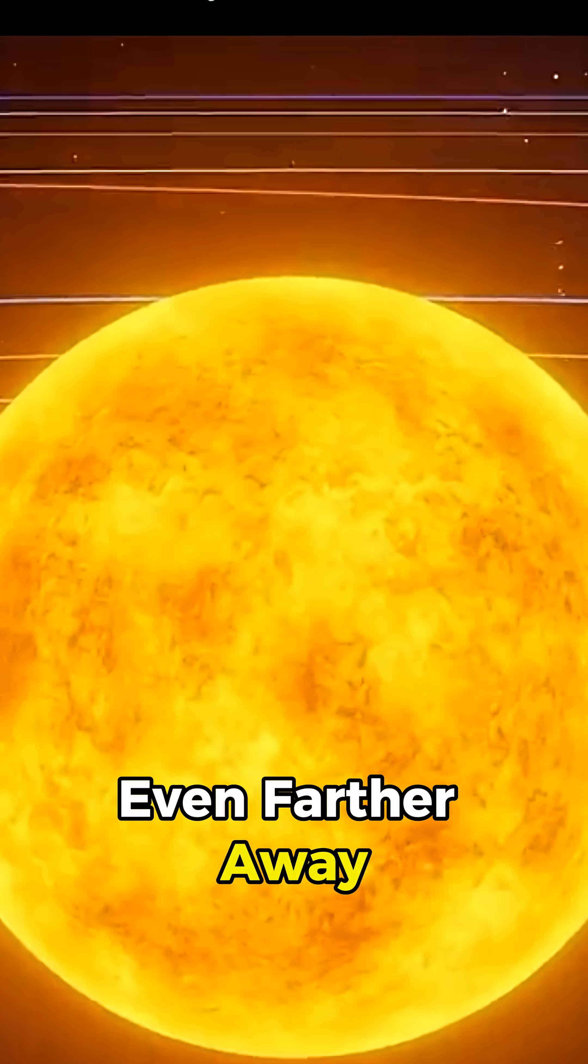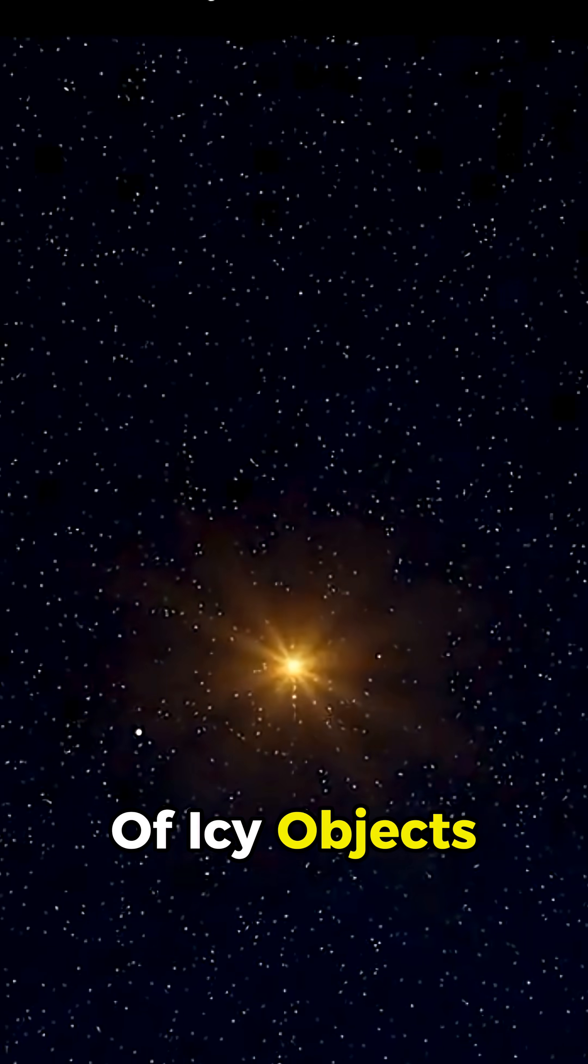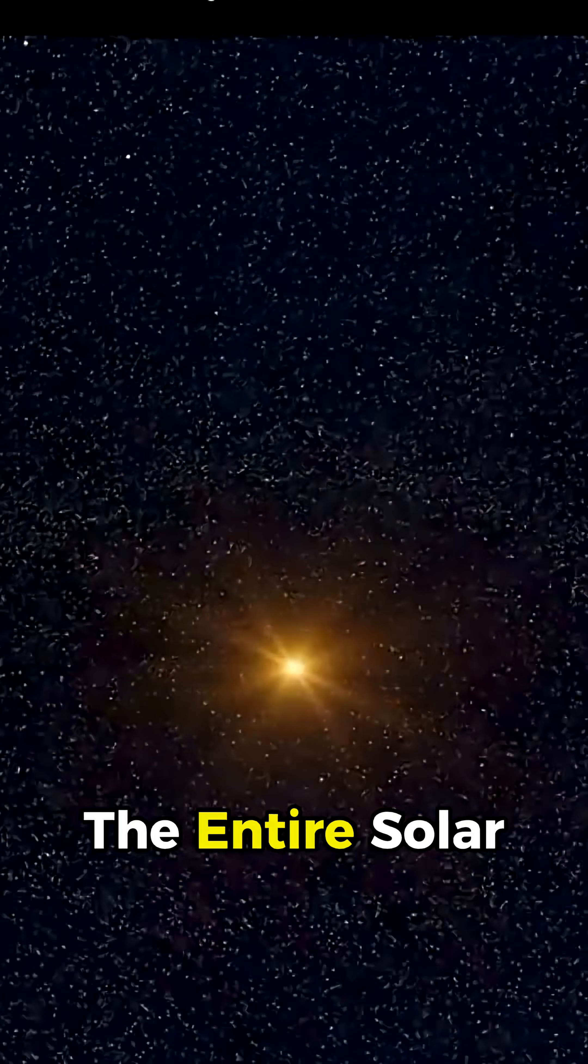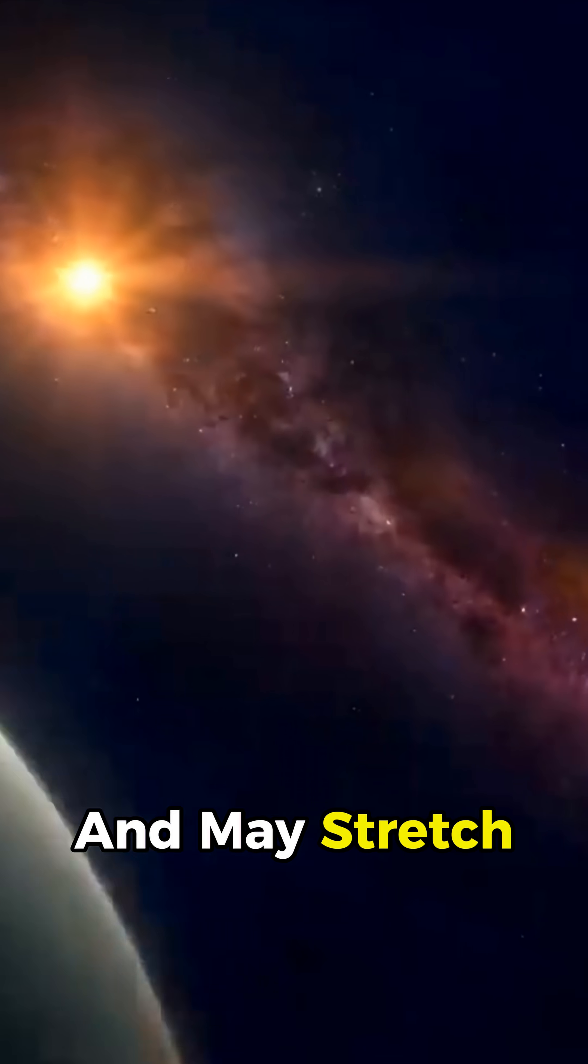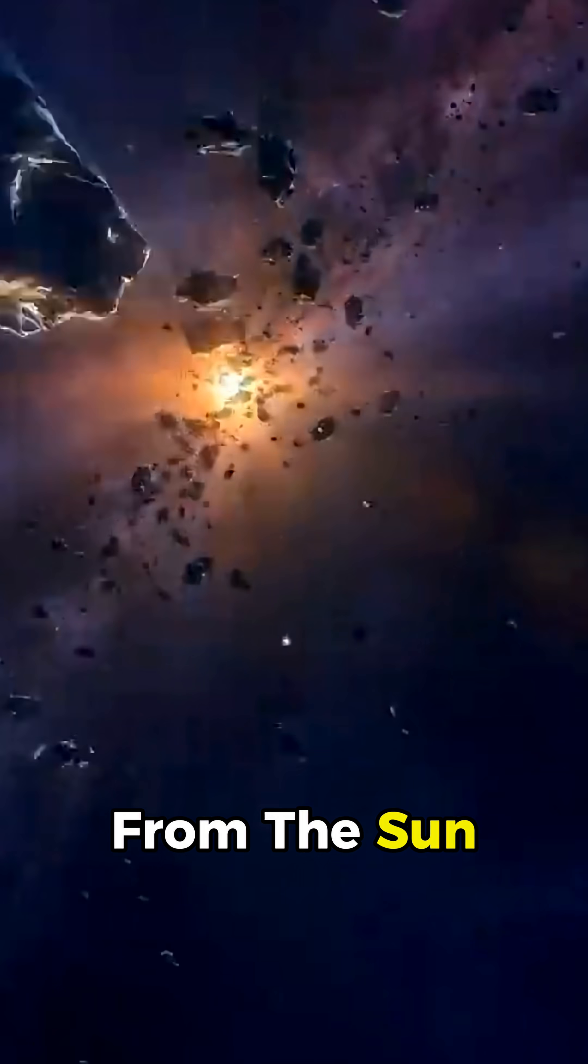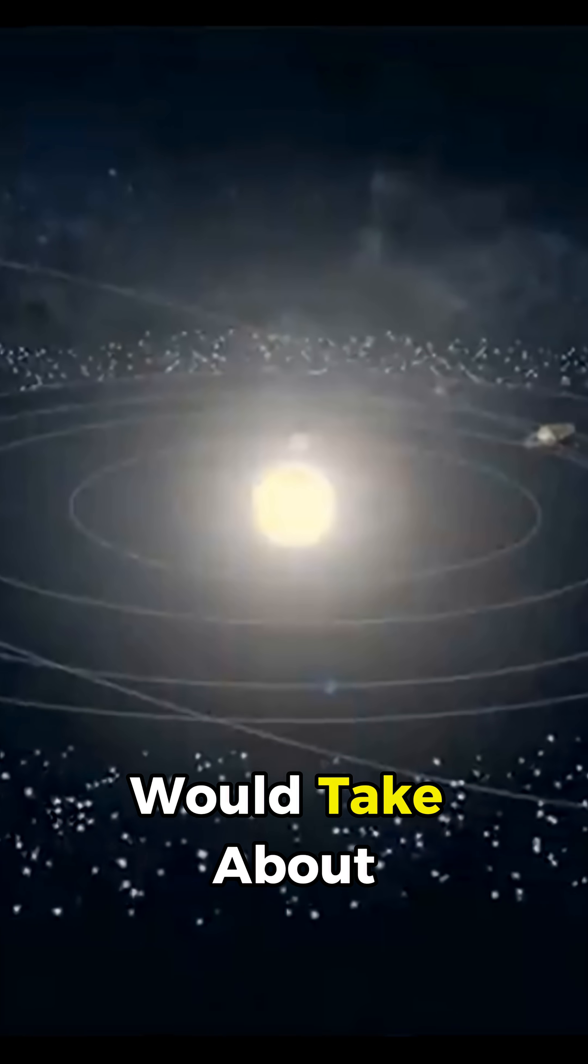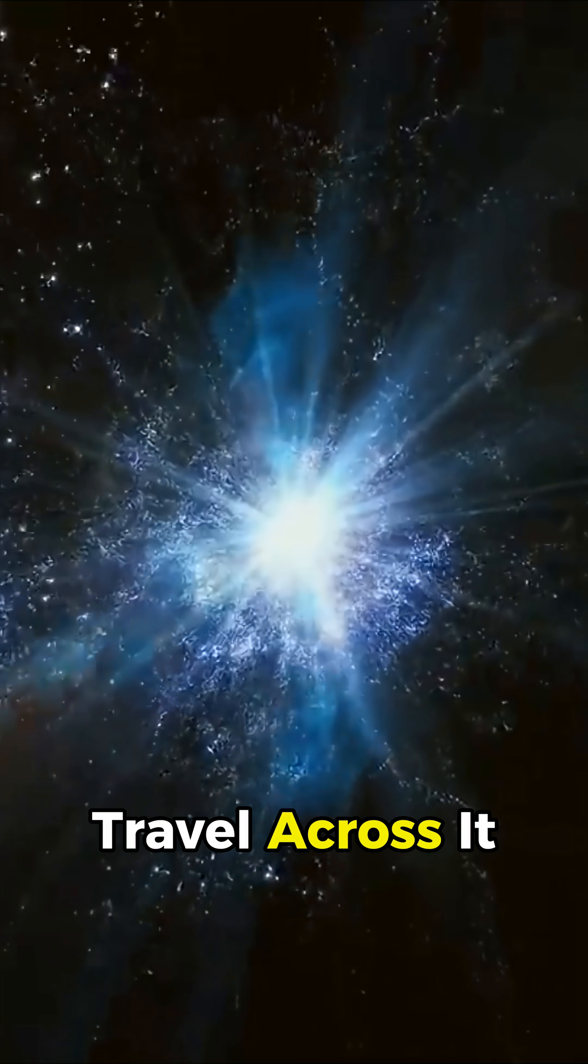Even farther away is the Oort Cloud, an enormous cloud of icy objects that wraps around the entire solar system and may stretch as far as 15 trillion kilometers from the Sun. To put that distance into perspective, even light would take about two years to travel across it.